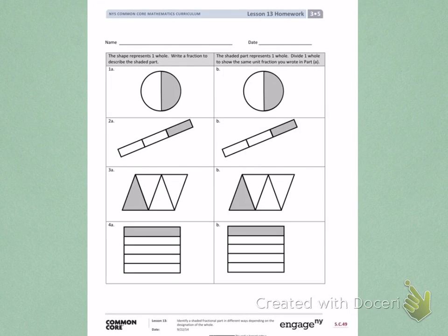This is Module 5, Lesson 13, Homework, Page 1. Today's objective was to identify a shaded fractional part in different ways, depending on the designation of the hole. There are two columns of directions that I need to solve.